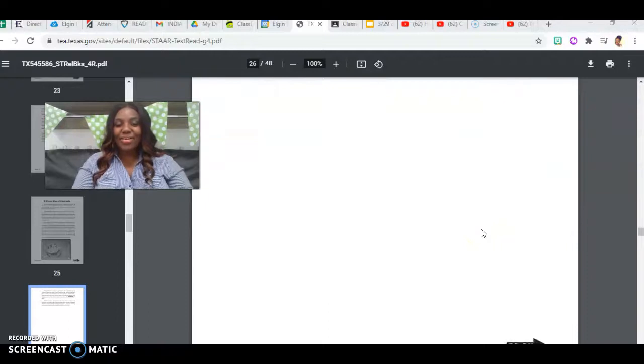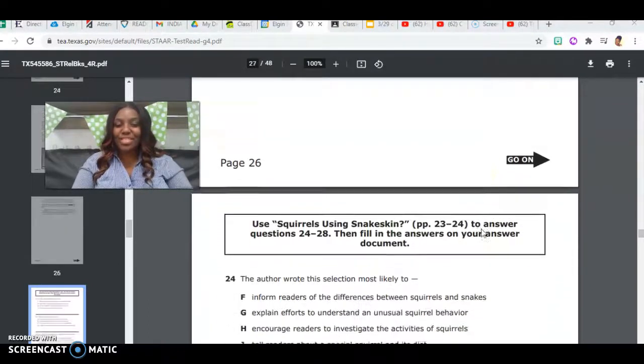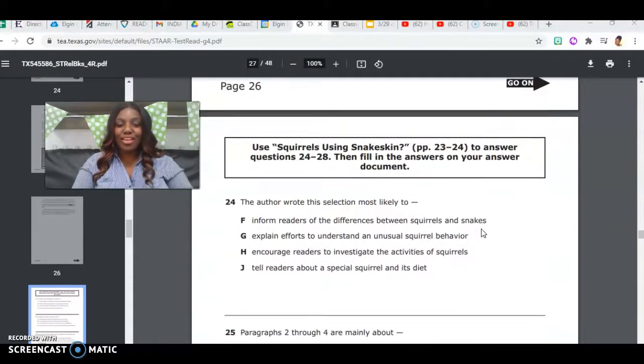Alright, so we are now going to look at our answer choices to see if you get across that troll bridge. Use Squirrels Using Snakeskin, pages 23-24, to answer questions 24-28. So notice this PP means pages. On the star test, just keep in mind pages 23 through 24 to answer questions 24 through 28. So number 24, the author wrote this selection most likely to...